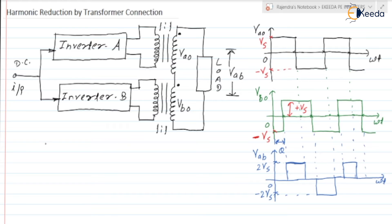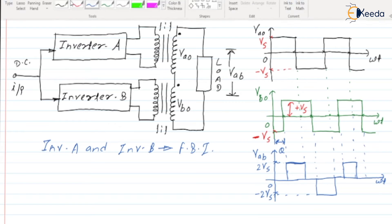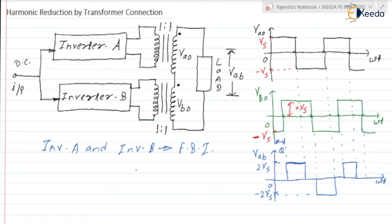Inverter A and inverter B are both full bridge inverters. The output of inverter A is connected to the primary winding of the first transformer, and the output of inverter B is connected to the primary winding of the second transformer. The secondary of the first transformer and the secondary of the second transformer are connected in series.